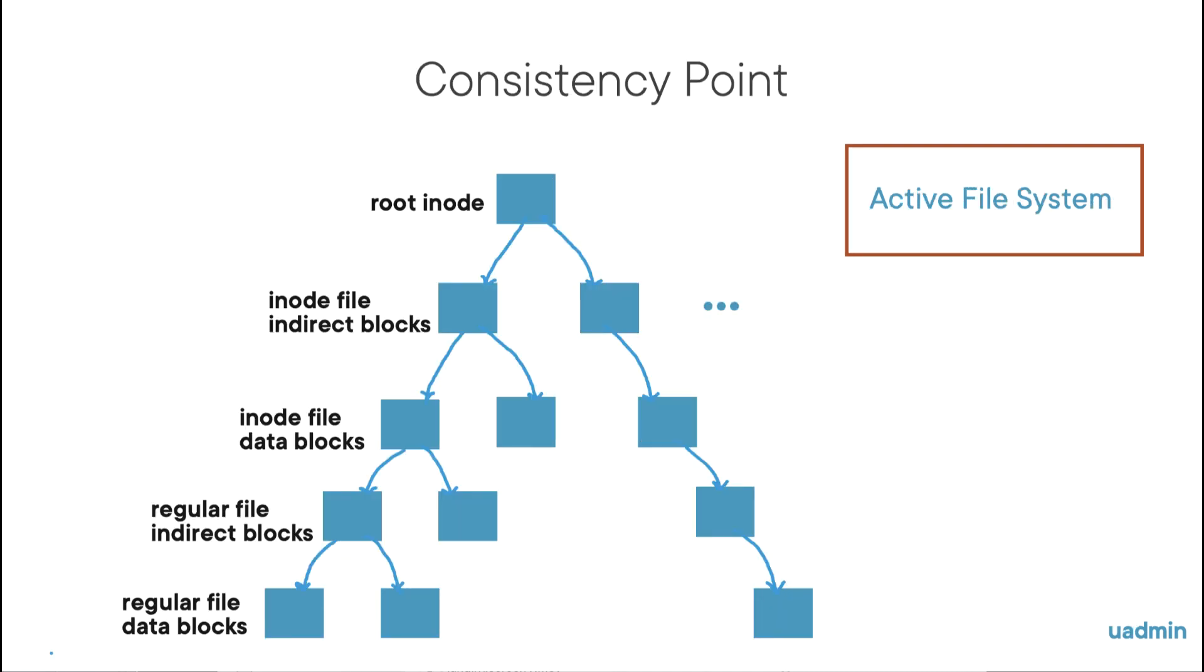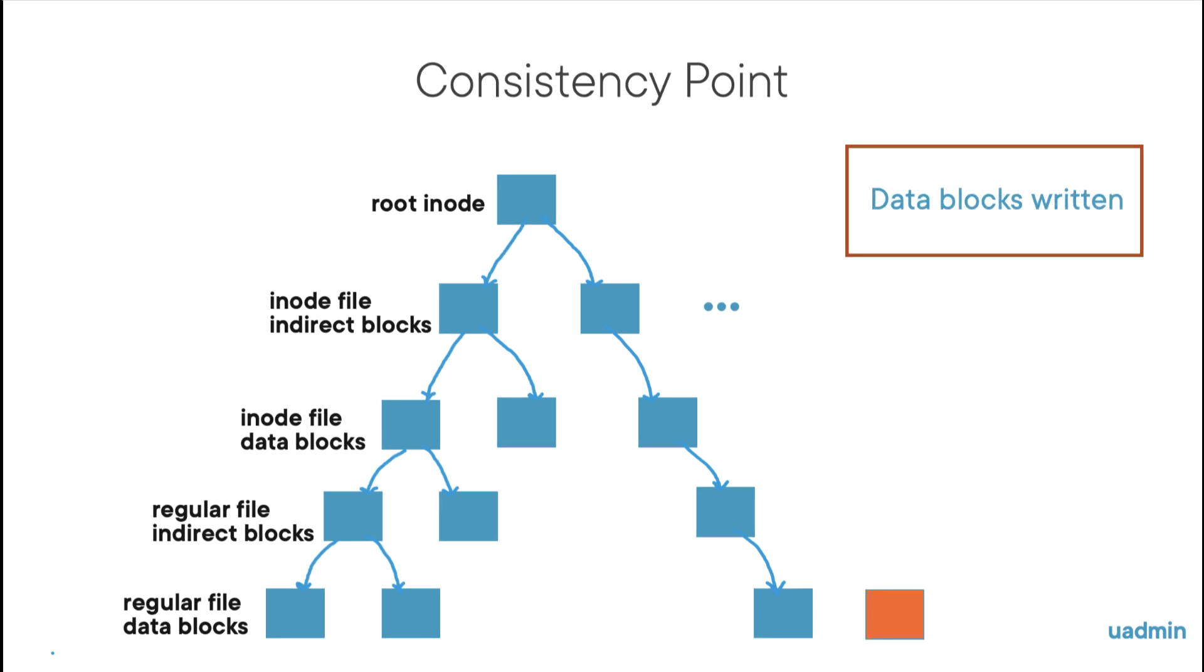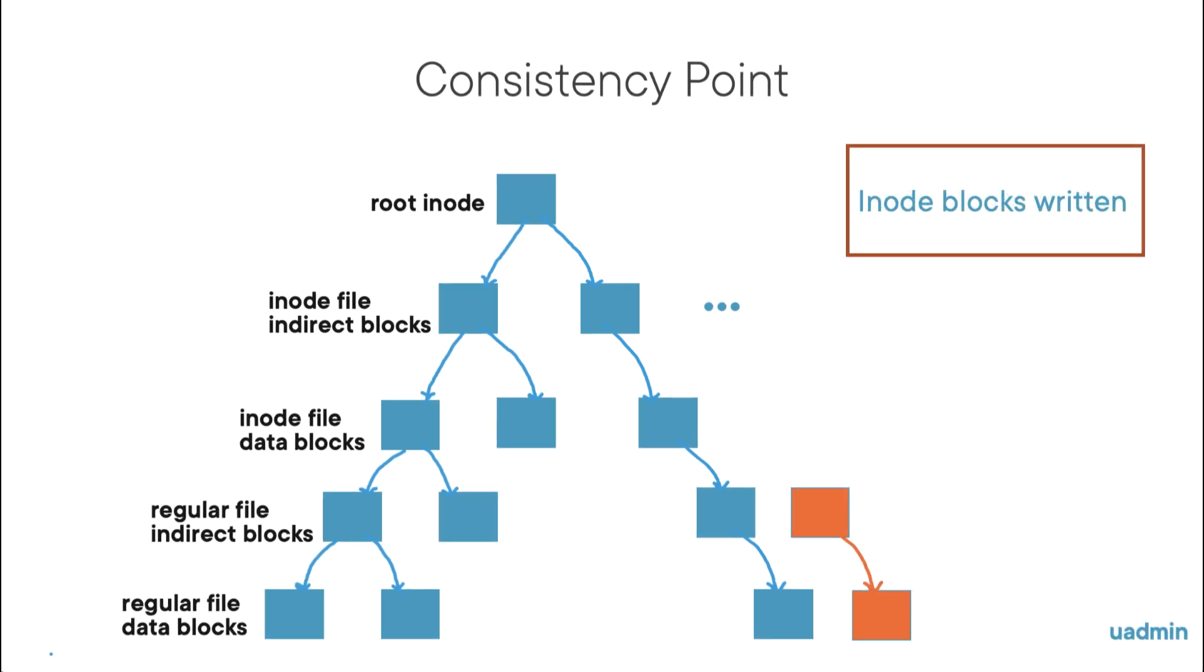Now what exactly is a consistency point? WAFL is a Unix-type file system and uses pointers to create a structure of four kilobyte blocks on disk. And at the top of this tree of pointers, there is the root inode, which is the starting point of the file system. Now consistency point involves writing all of the data blocks from the write buffer to disk. And if all of the blocks are on disk, then the root inode of the volume is overwritten, which creates a new view of the active file system. So if a consistency point is started, all blocks will be written to disk from the bottom up, so to say.